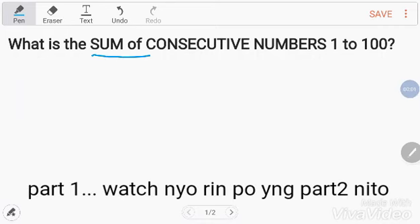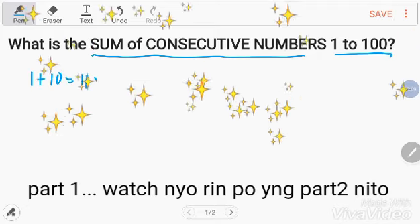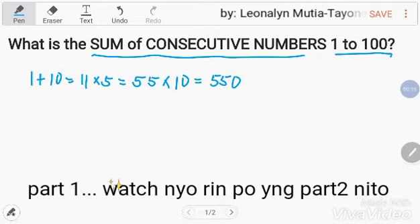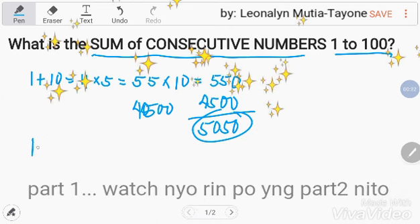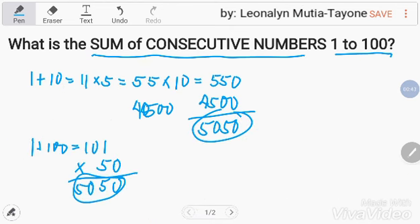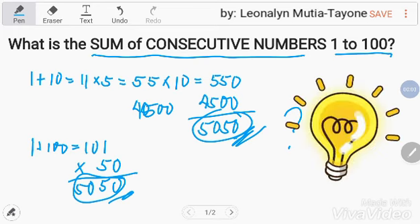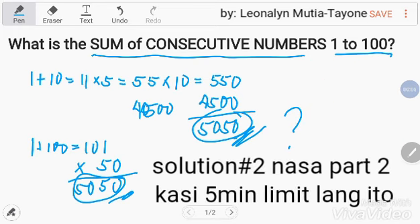What is the sum of consecutive numbers 1 to 100? And the answer is 5,050. How did I do that? Yan ang i-share ko ngayon. There are many ways to answer this, and I will share two ways without using any formulas. While all other solutions will be shared as captioned in this video.